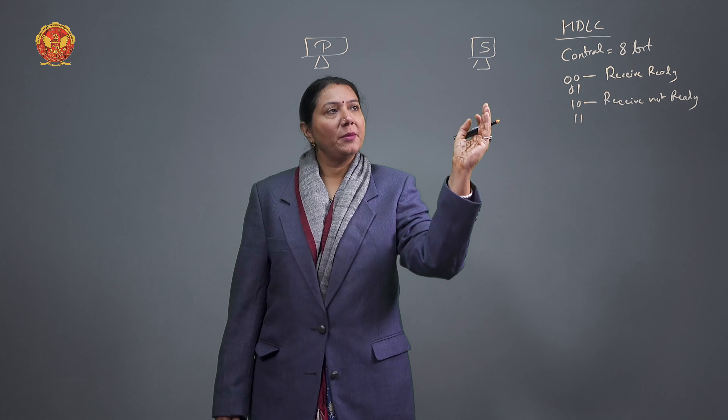In HDLC, the primary communicates with the secondary. When the primary wants to ask the secondary if it has data to send, this is called the Poll feature. The primary uses the supervisory frame with the first two bits set to 10, and uses the Receive Ready (RR) function with the P/F bit set to poll the secondary.